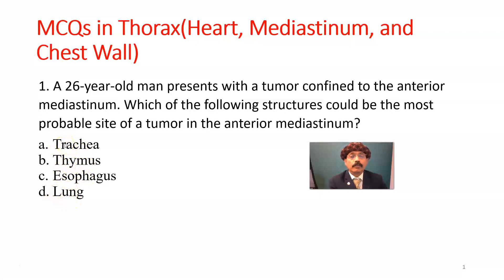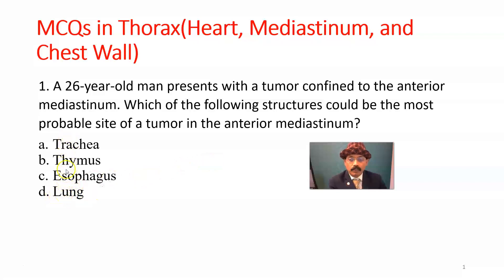Trachea is not a content of anterior mediastinum; trachea is a content of superior mediastinum. Thymus is a content of anterior mediastinum. Esophagus is a content of posterior mediastinum. Lungs are not content of the mediastinum. So our answer should be B, thymus. Thymus is a site of tumor — that may be thymoma — which may be benign in many cases but sometimes may be malignant.